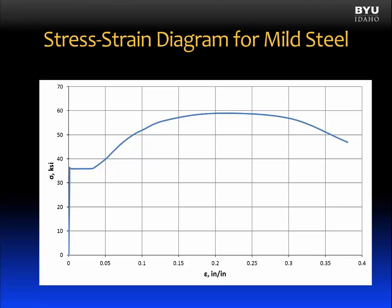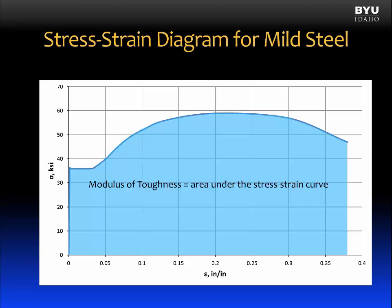Another useful material property is the modulus of toughness. It represents the area under the stress-strain curve all the way up to rupture. For example, the modulus of toughness is a useful property when selecting materials for structures subjected to earthquake loads. In a building subjected to an earthquake, it is important that the structure absorb a considerable amount of energy before it fails, allowing occupants to evacuate before collapse.